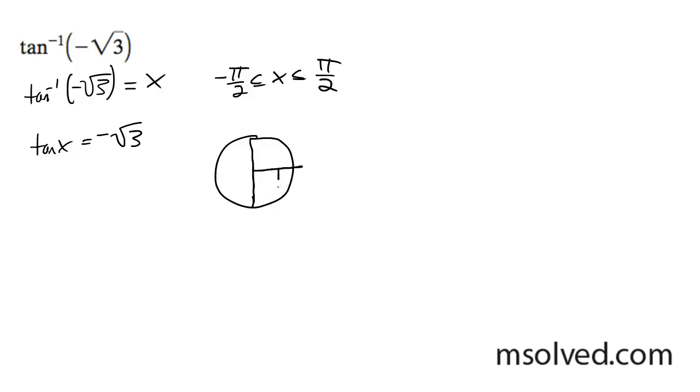So my y component can be negative root 3, because it's y over x. Now I'm not quite drawing to scale, that's more of a 45 degree angle, should be about right there. But my y is going to be negative root 3, and my x is going to be 1. So this is a 60 degree triangle going down, so it's negative pi over 3.